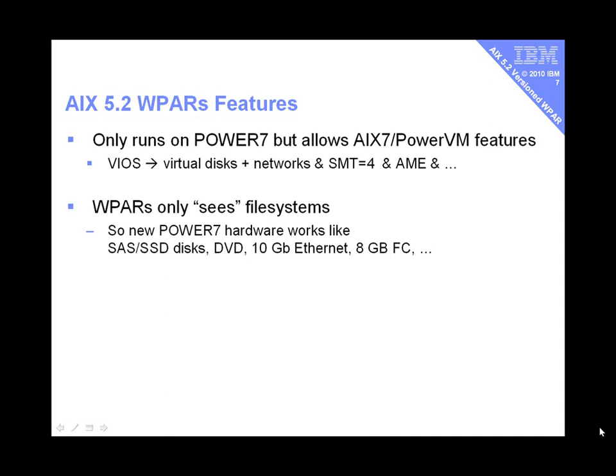AIX 7 could be using AME — Active Memory Expansion — compressing memory to make better use of it under the covers, and the WPAR will be unaware of this. Also, because the WPAR only sees file systems rather than real disks, the WPAR can be supported by newer disks it has never seen before — like SAS disks or solid-state disks. DVD drives, 10GB Ethernet, and 8GB Fibre Channel adapters, none of which existed at the time, can all be underlying the WPAR. The WPAR will not know that any of that is underneath.